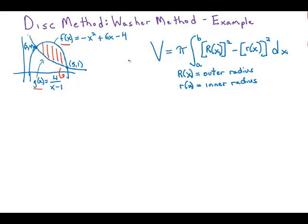As we discussed in the last video, this is the general formula for the washer method where capital R of x is the outer radius and little r of x is the inner radius.